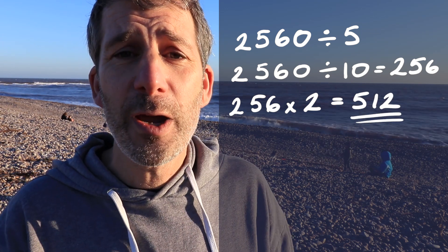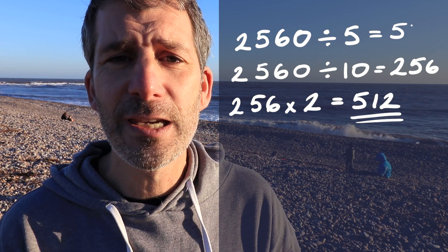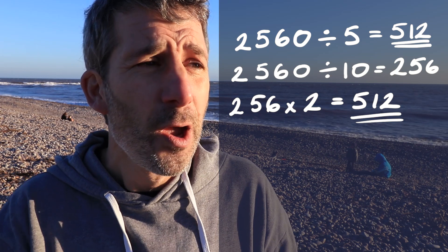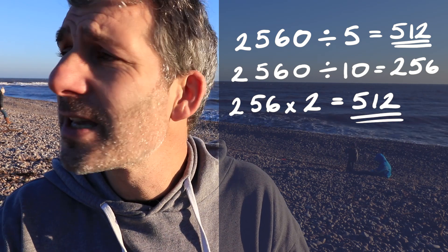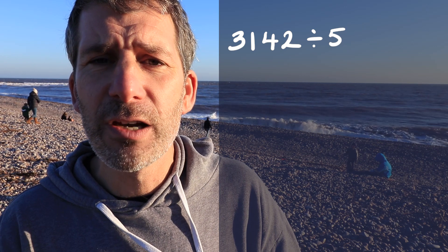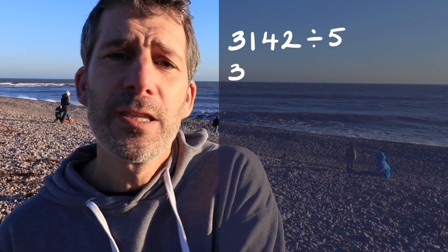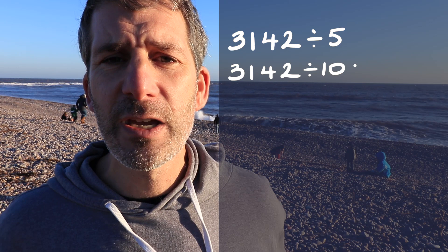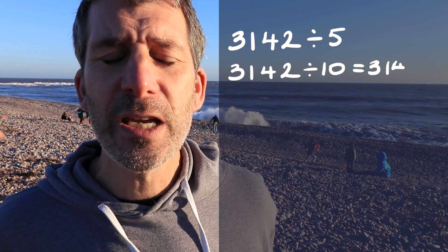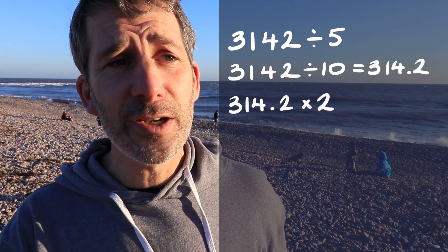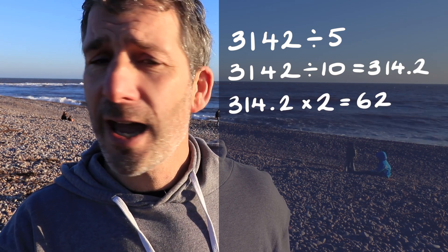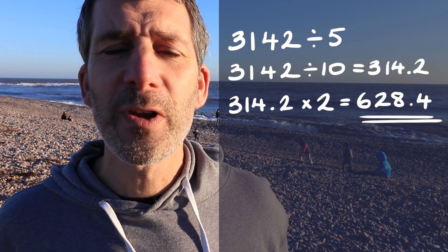That is it — really really quick, really really easy, a great way to divide by 5. It works even with more awkward numbers. Let's say you wanted to do 3142 divided by 5: divide by 10, which gives 314.2, and then double that, which is 628.4.